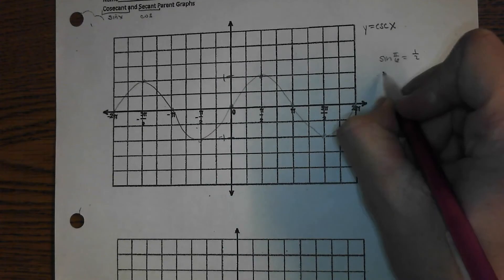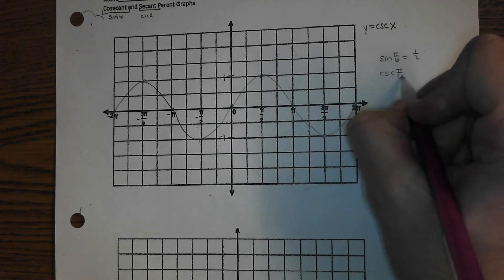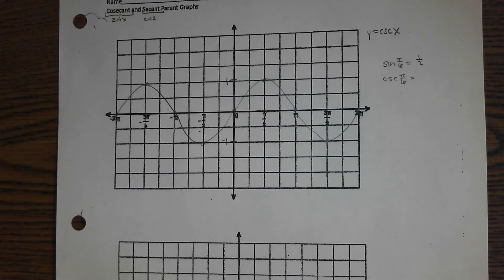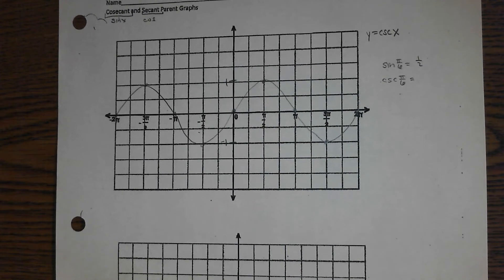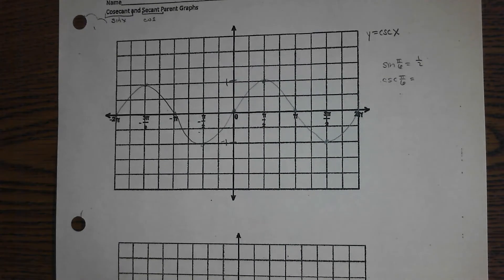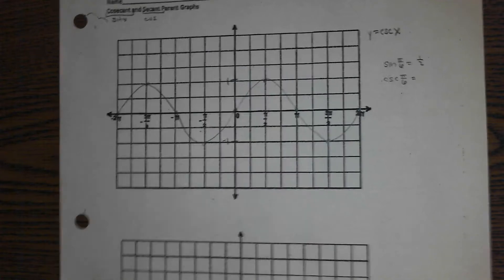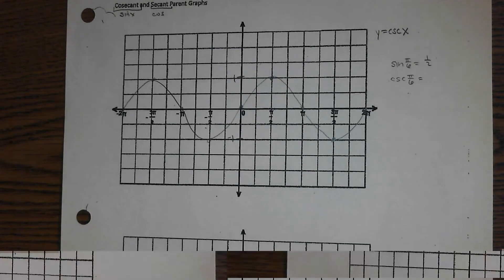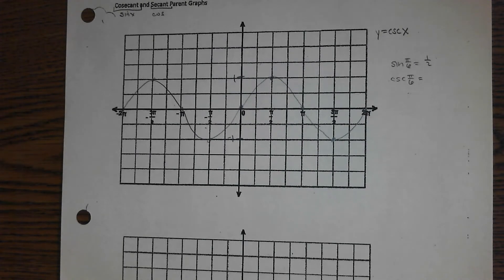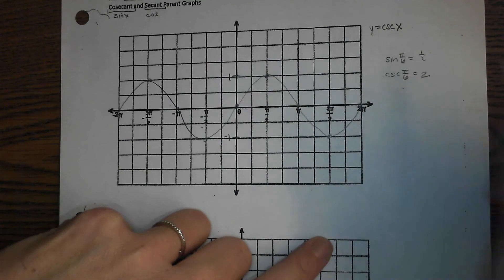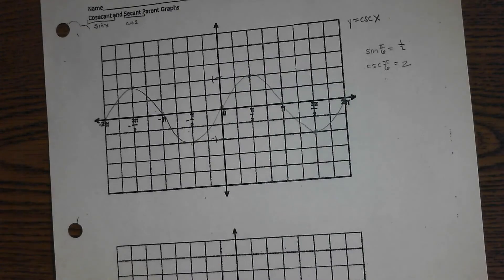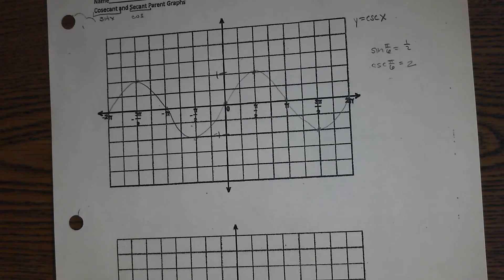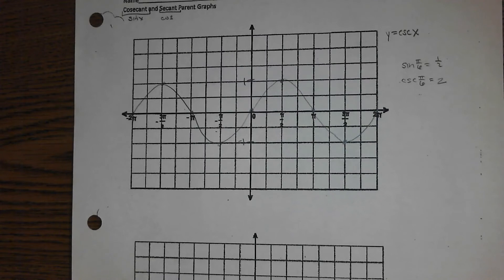So the cosecant of pi over 6 would be what? 2. You just gave me the cosine. You were using the fact that sine and cosine are complements. Cosecant is your reciprocal function, so you're at 2. So any kind of value that you see, we're going to reciprocate.